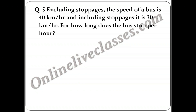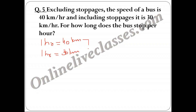Question 5: Excluding stoppages, a bus travels at 40 km/hr. Including stoppages, its speed is 30 km/hr. For how long does the bus stop per hour? Without stopping, the bus covers 40 km in one hour. With stoppages, it only covers 30 km — a shortfall of 10 km.